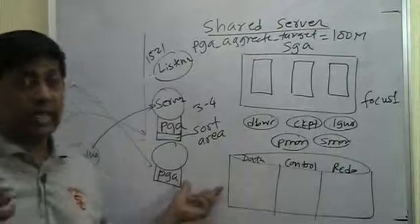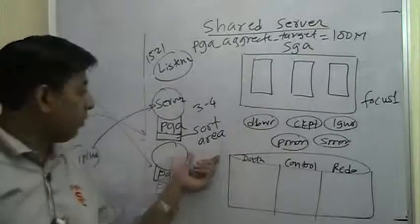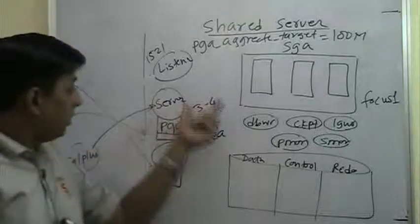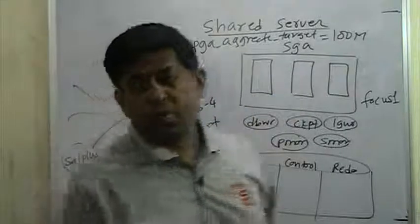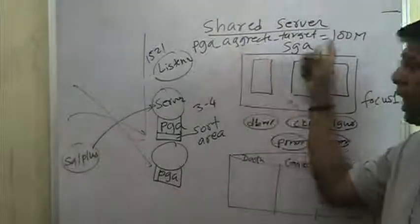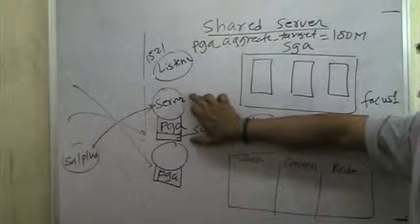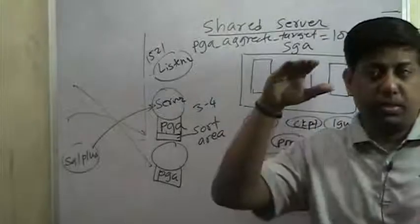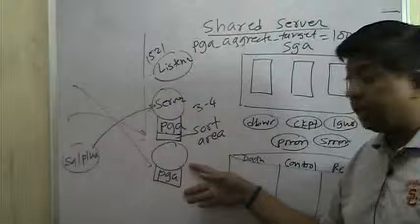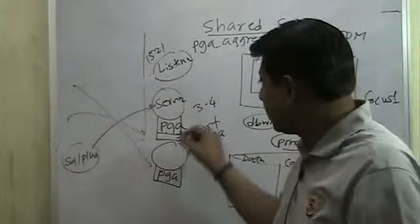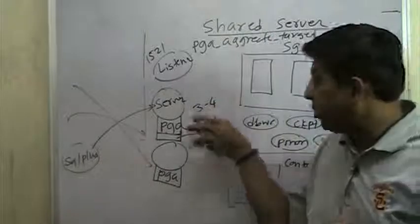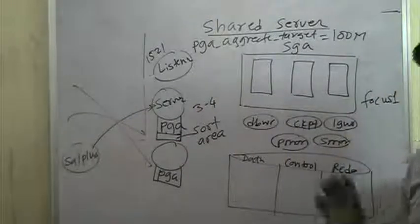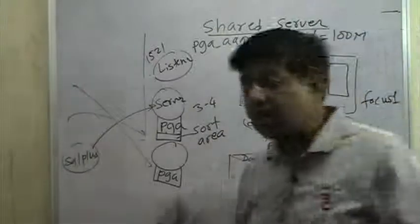If my PGA_AGGREGATE_TARGET is set to 100 megabytes in the initialization parameters, the PGA of this dedicated server process plus the PGA of all other, say 50, dedicated server processes created by the listener for various clients - all PGAs added together will not go beyond 100 megabytes. If one dedicated server process requires more PGA because it is doing more sorting, it will expand, and some other process's PGA will contract, so that everything stays within 100 megabytes.